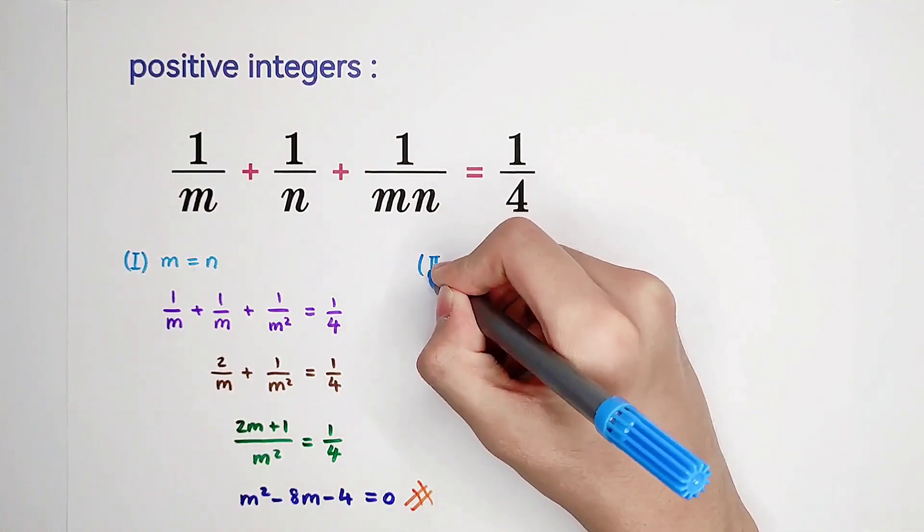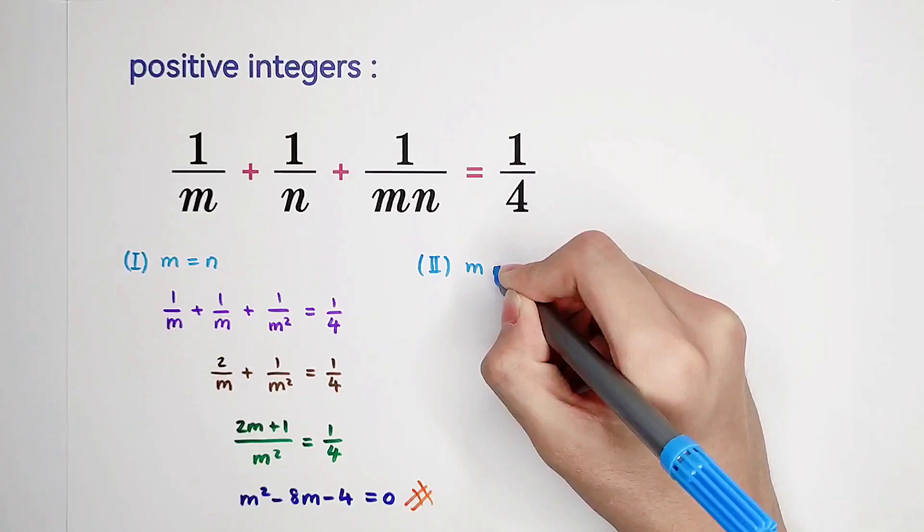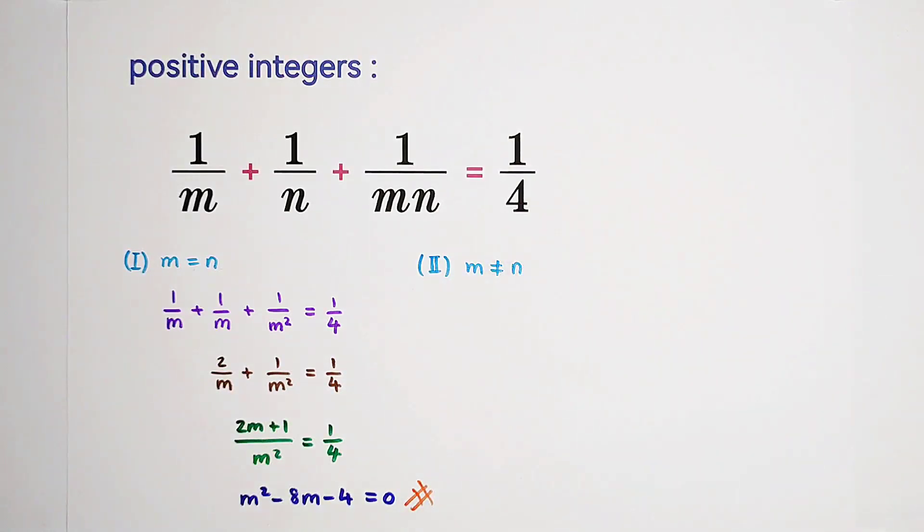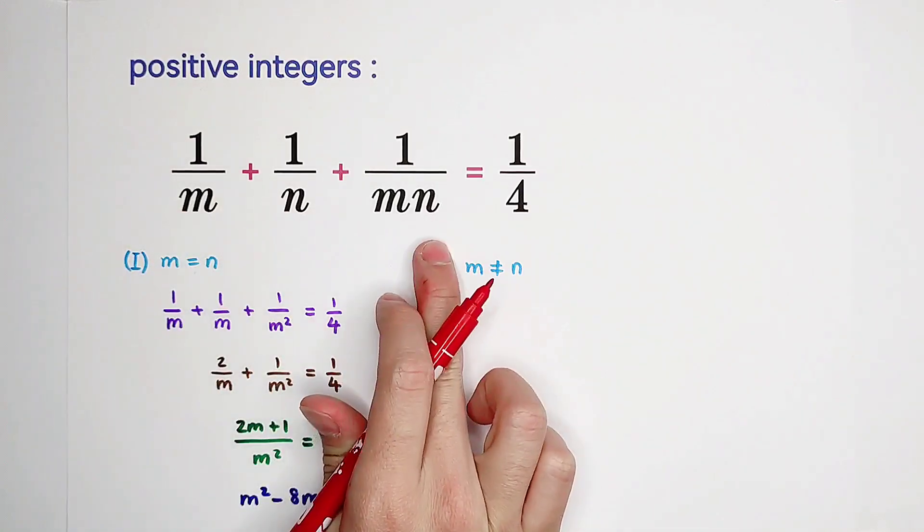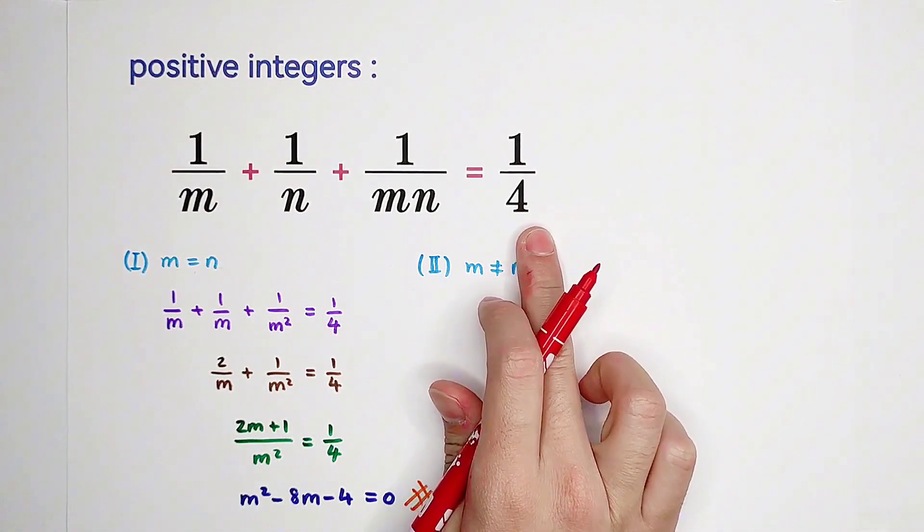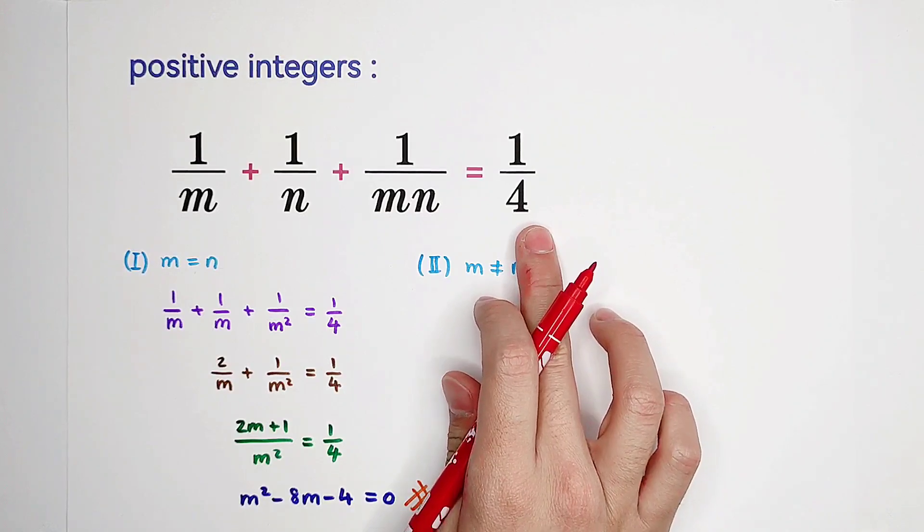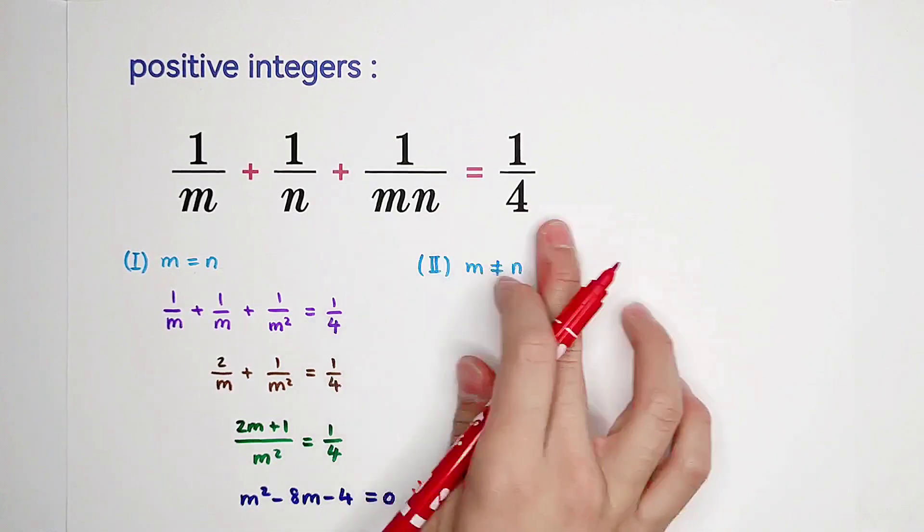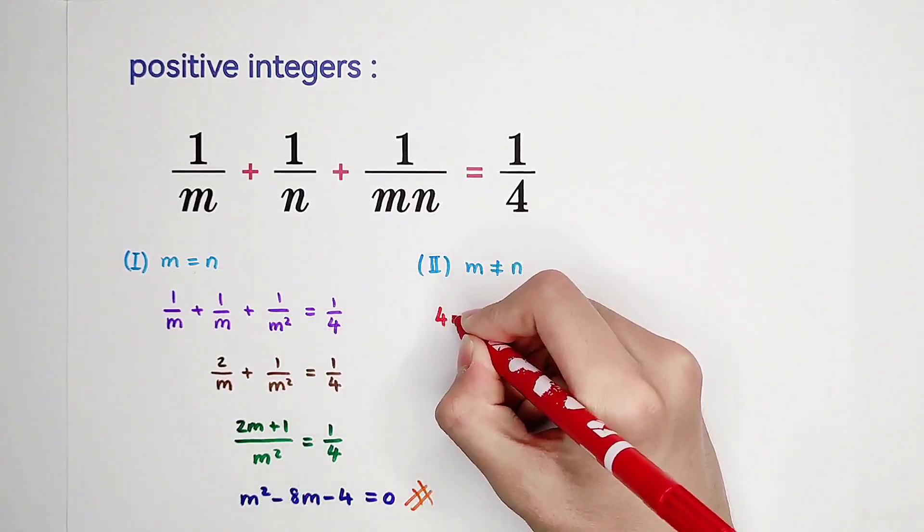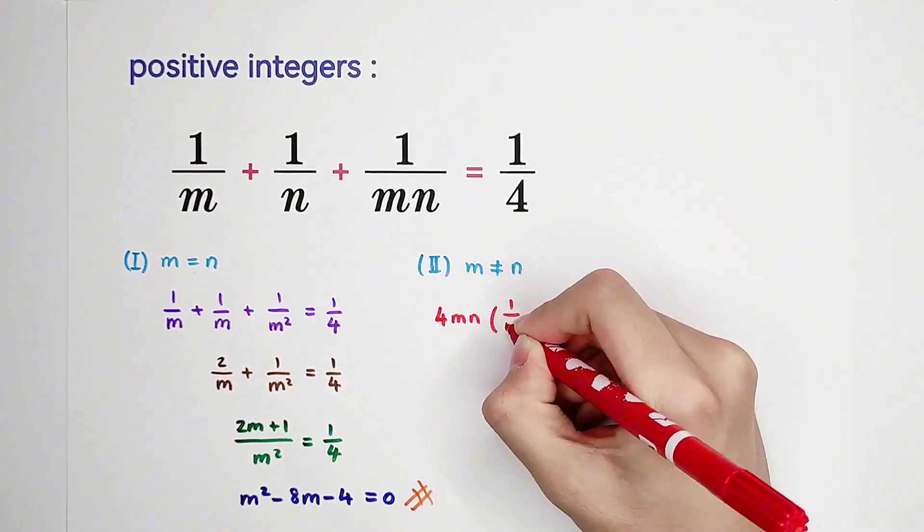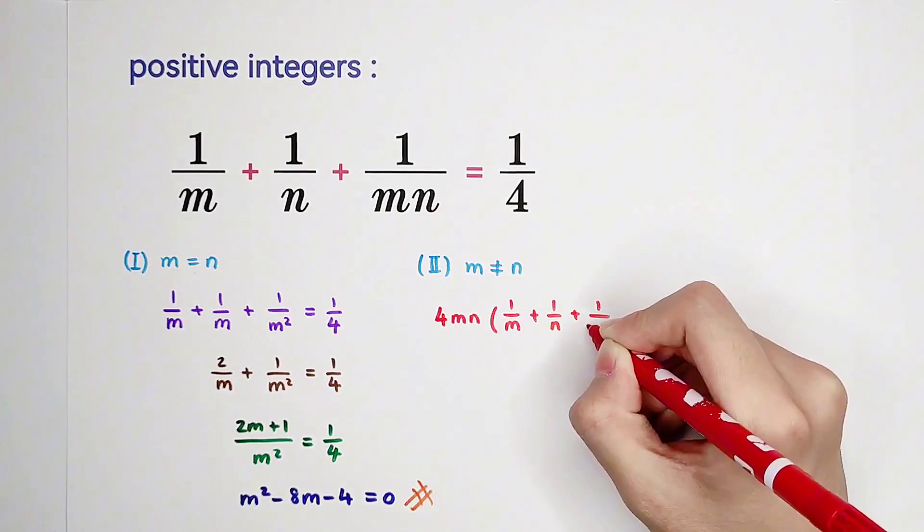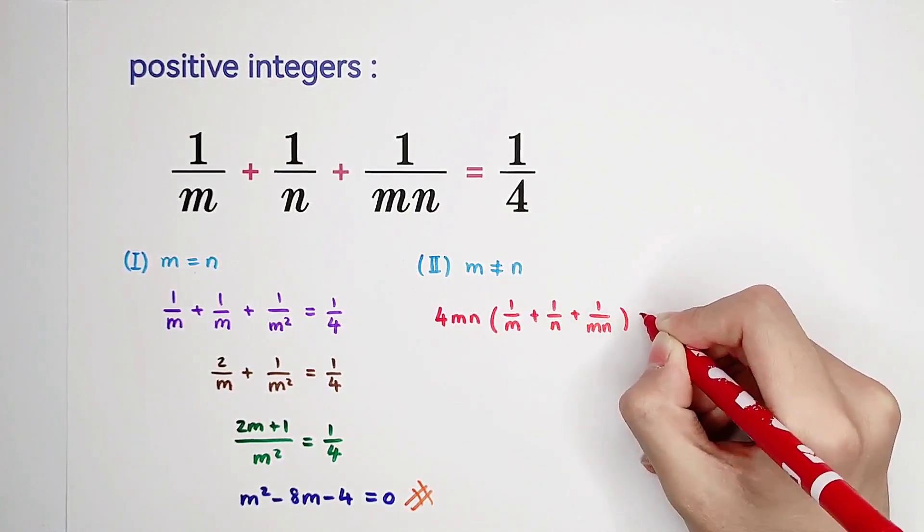Now, in our second case, we'll have a look at the equation when m is not equal to n. Now, because m and m times n and 4 are the denominators and we hate denominators, we can multiply both sides by 4 times m times n.